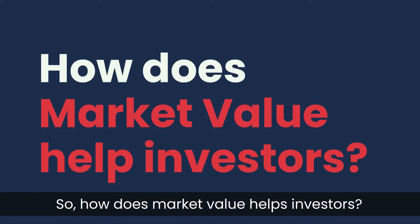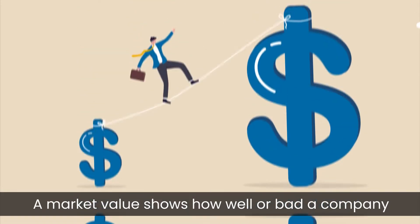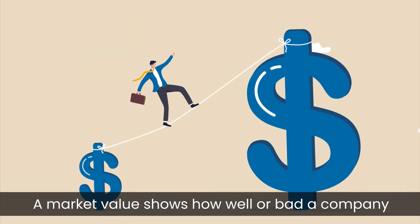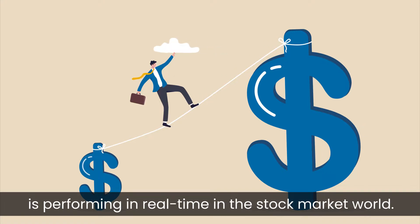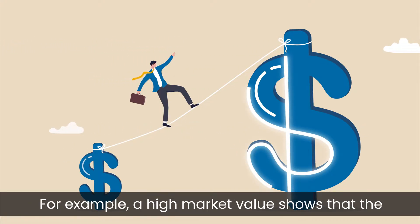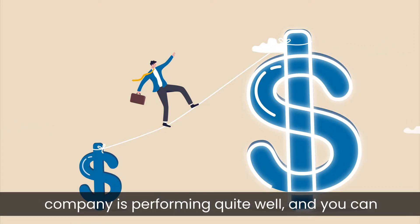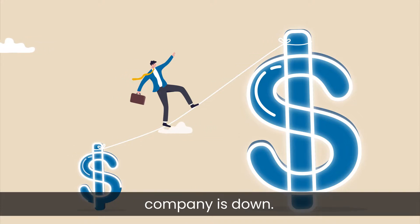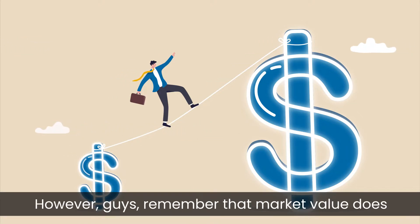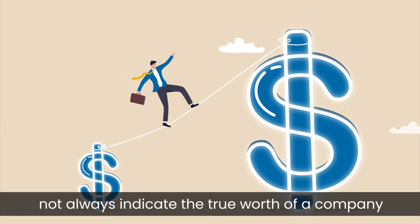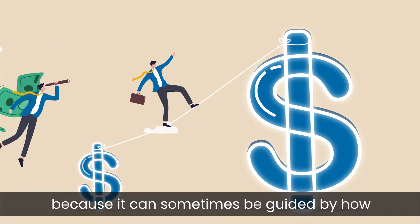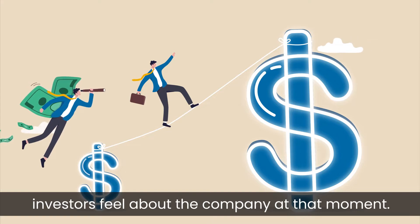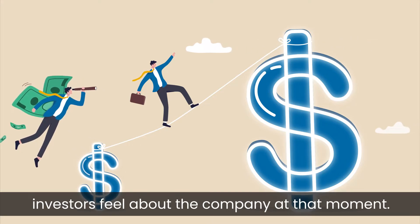So how does market value help investors? Market value shows how well or badly a company is performing in real time in the stock market world. For example, a high market value shows that the company is performing quite well, and you can expect the opposite if the market value of the company is down. However, remember that market value does not always indicate the true worth of a company because it can sometimes be guided by how investors feel about the company at that moment.